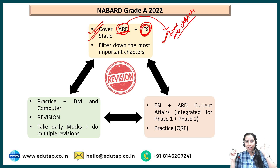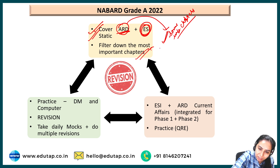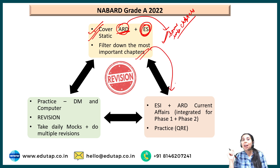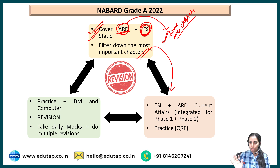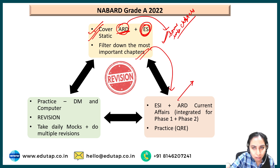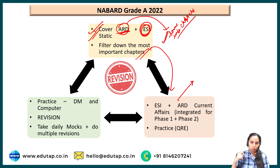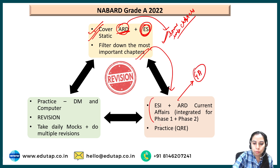After you have done the static part, go to the ESI and ARD current affairs part, because this is the second most important pillar in Phase 1. Whatever you read in ESI and ARD current affairs is going to be useful in Phase 2 also. You can keep Phase 1 in mind and prepare. One more thing you will do is GA — we'll talk about it in detail.